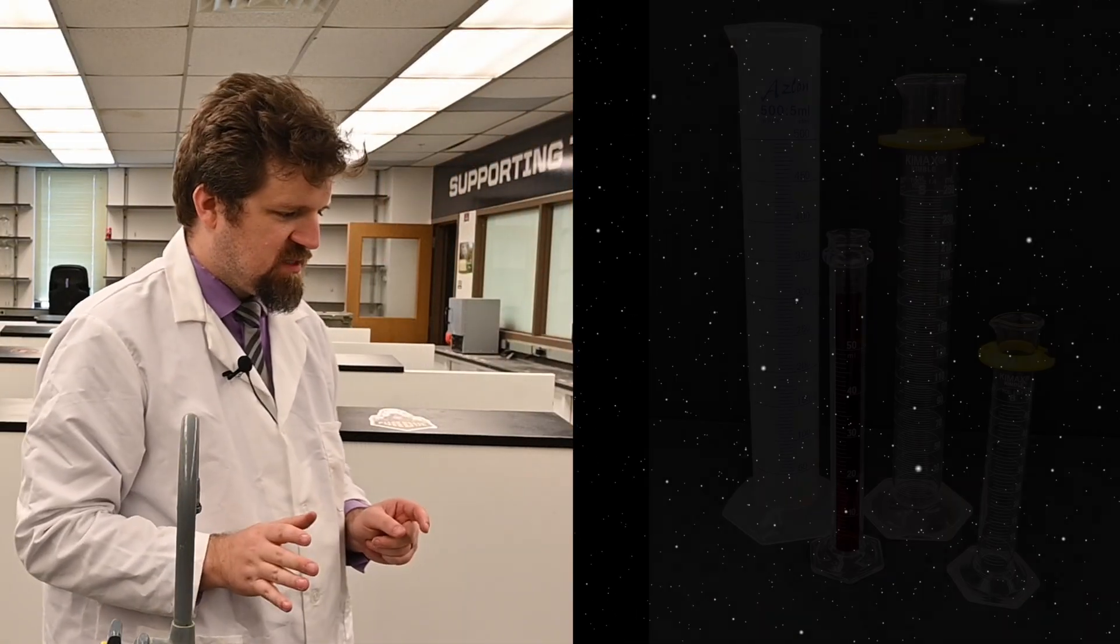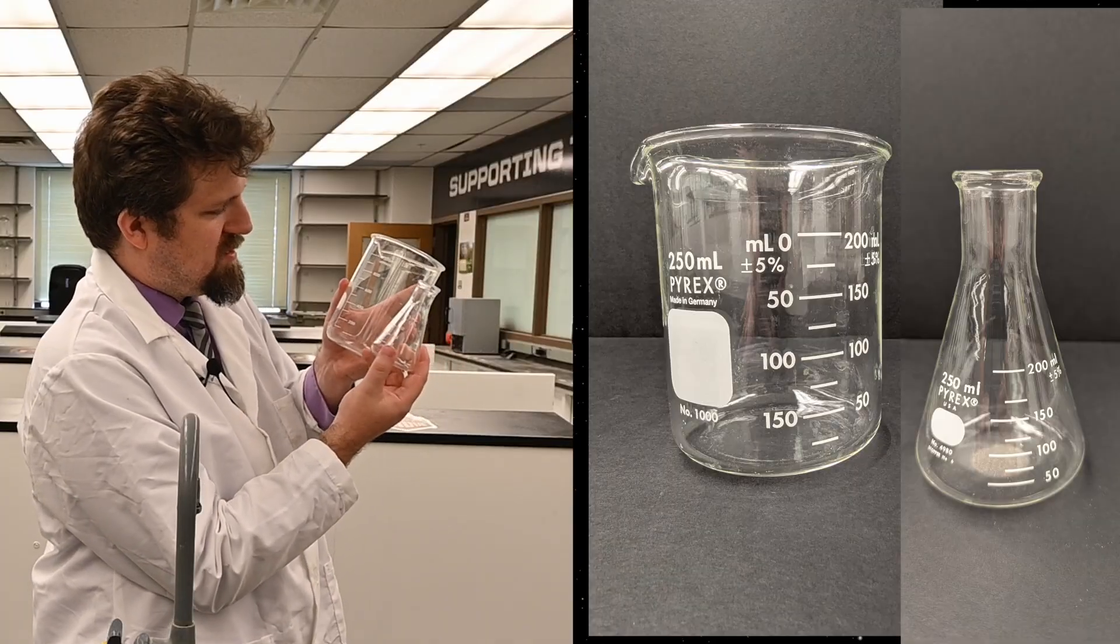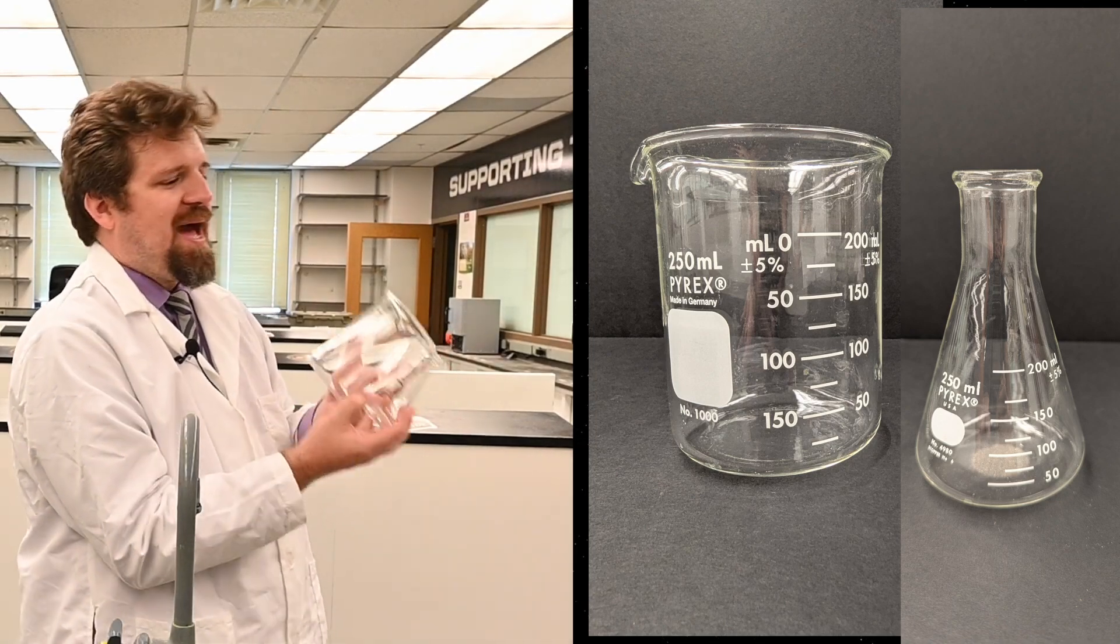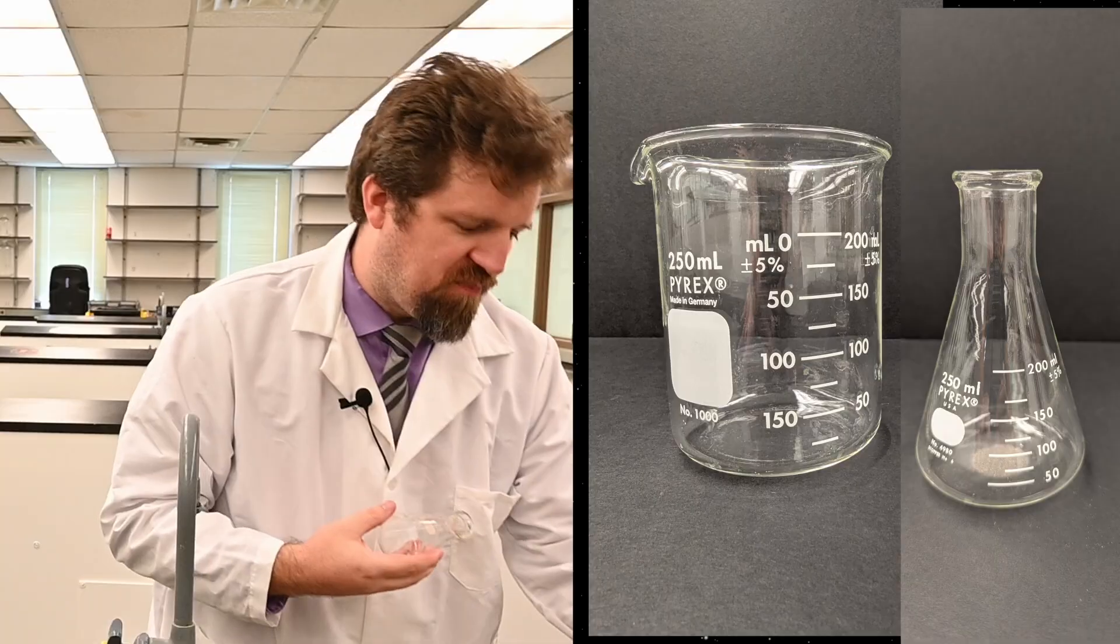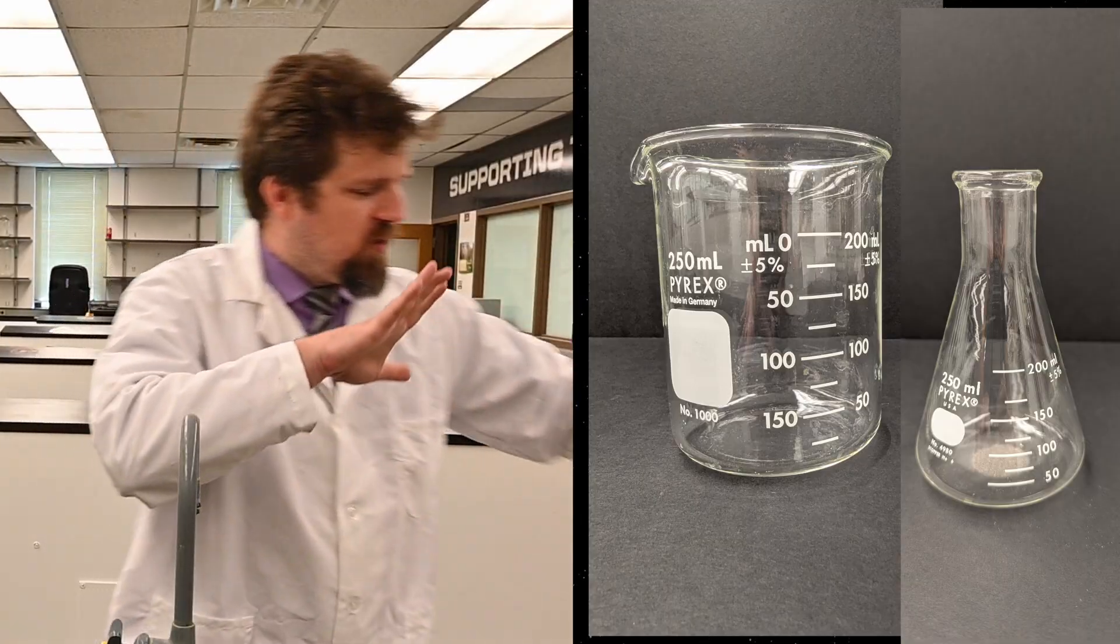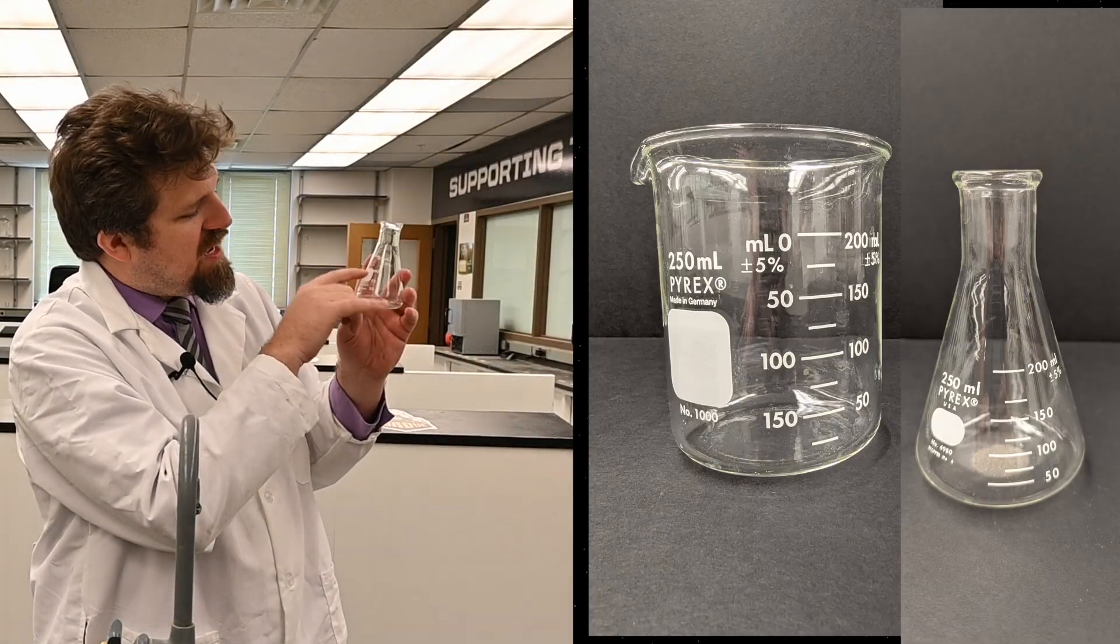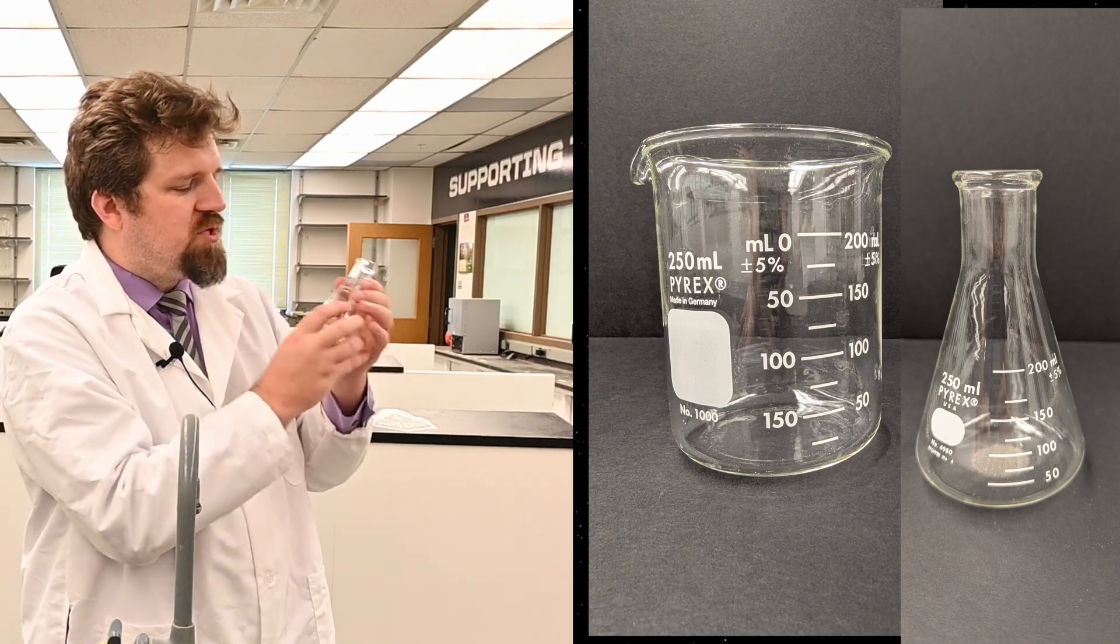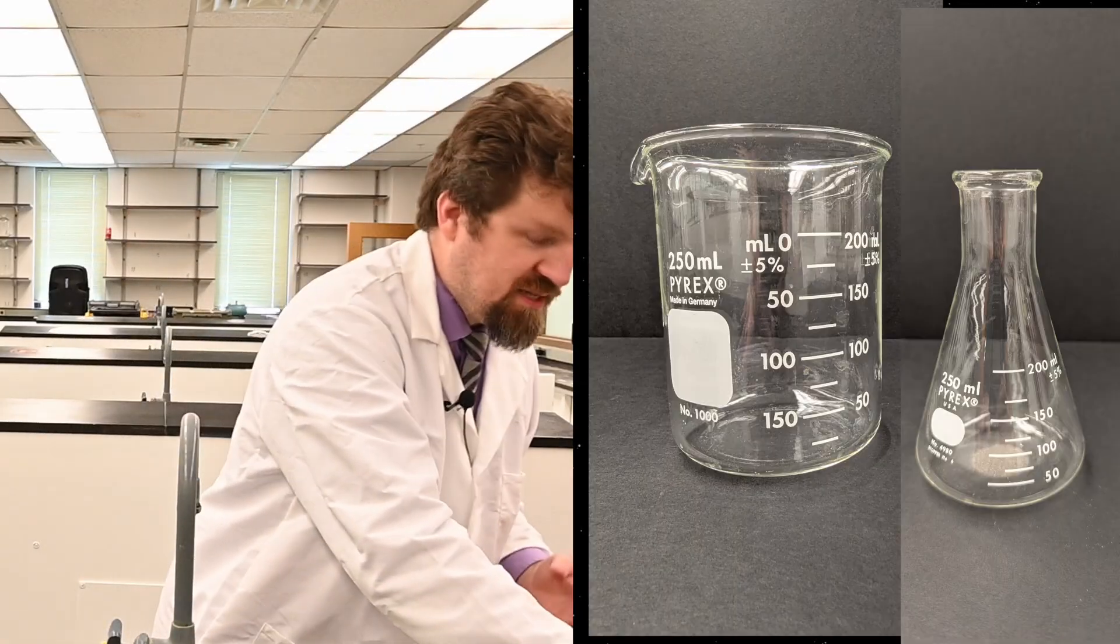Some of you keen-eyed observers might have noticed that the flask and the beaker also have lines on it, so why can't we just use these to measure? Please don't. Please do not. These are not that precise. If you measure, if you put water up to that line, say that's 50 mils, it's going to be pretty close, but it's not going to be anywhere near as precise as this 50 right here. The reason they put the marks on is that you can have an estimate. Do not use these as super, super precise, because they are not. You want to use a graduated cylinder for something like that.